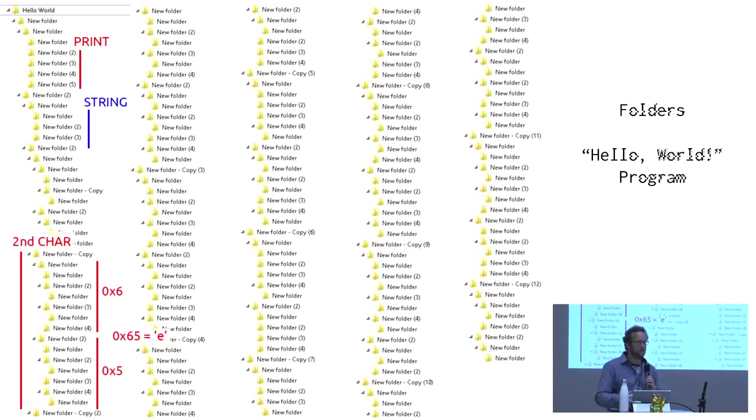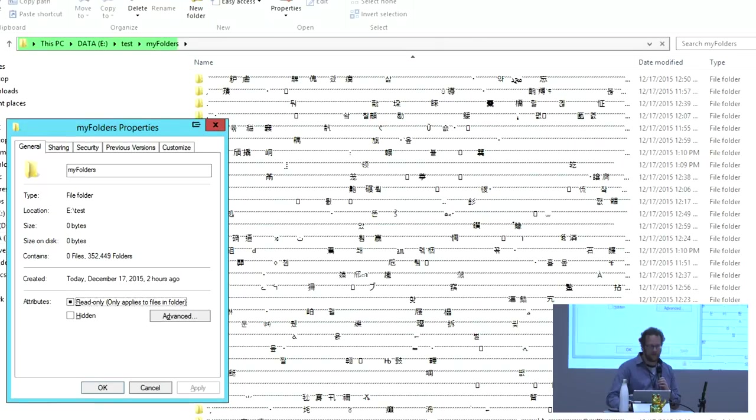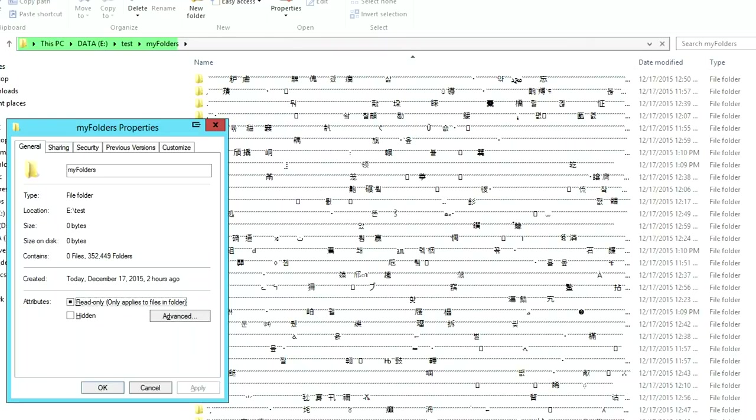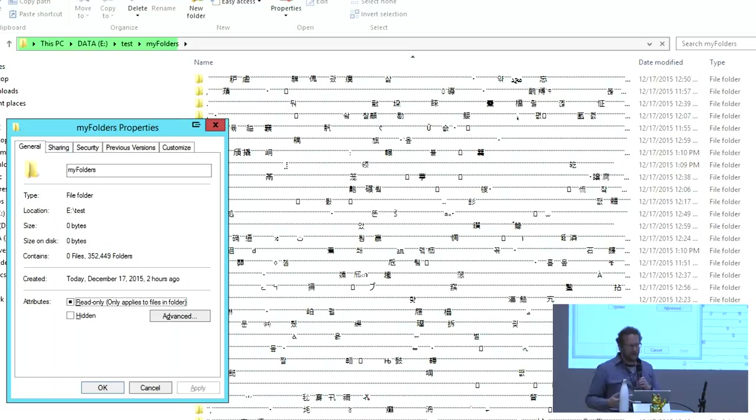Now the nice thing about folders in Windows is that they supposedly take up no space on disk. You can see this by creating 300,000 folders and getting info on it. It takes up zero bytes. So as long as you're storing your information in my folders file system and using the folders programming language, you have infinite disk space. Of course that's not entirely true. It's just Windows lies to you. But it's kind of a nice feeling knowing that you supposedly have all the space that you want.